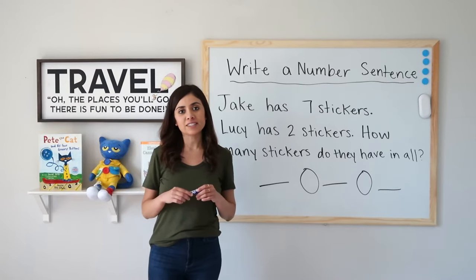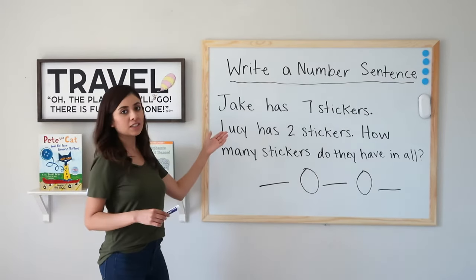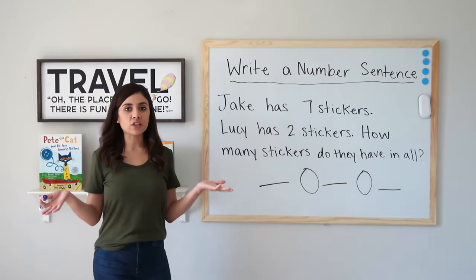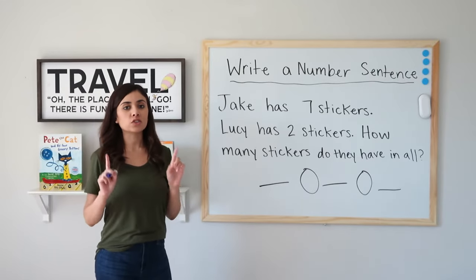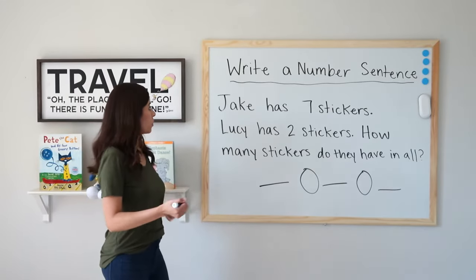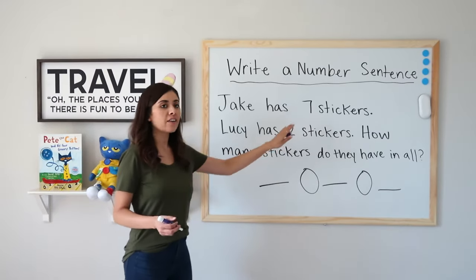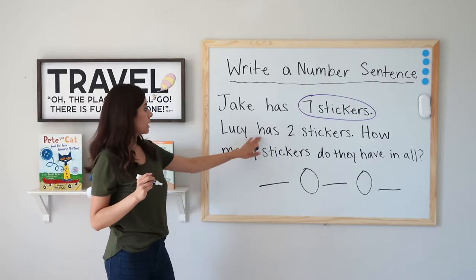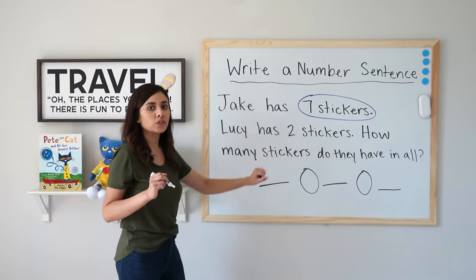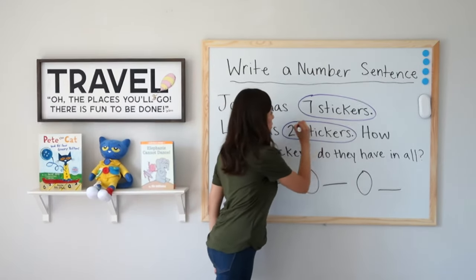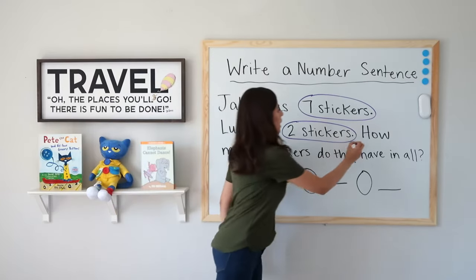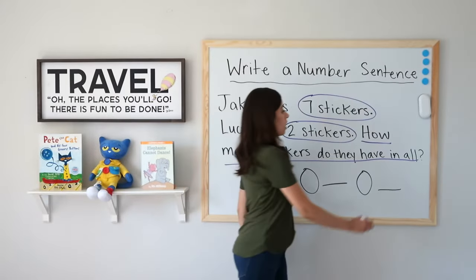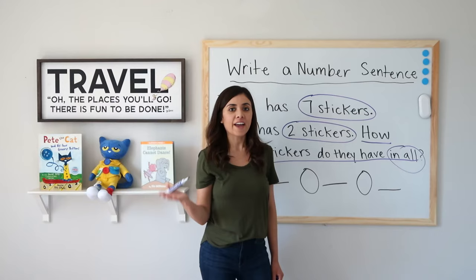So let's go ahead and take a look at a second example. It says: Jake has seven stickers, Lucy has two stickers. How many stickers do they have in all? Remember, the first step is to circle what I already know. Jake has seven stickers, so I will circle seven stickers. Lucy has two stickers, so I will circle two stickers. And I want to know how many stickers do they have in all — and "in all" means to add.